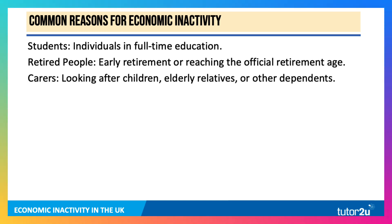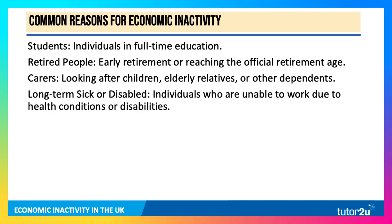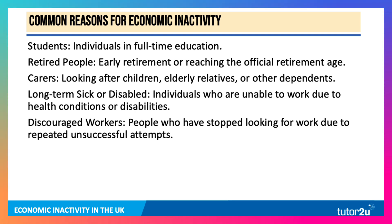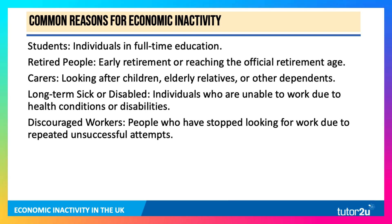People might be carers, looking after children and also elderly relatives or other dependents — the so-called sandwich generation, people who are still looking after their children but also having to look after elderly relatives. There is also an issue with long-term sickness and disabilities, where people are unable to work due to chronic health conditions. And there are discouraged workers — people who have been unemployed for a long time, tried to find new work, but have stopped looking due to repeated unsuccessful attempts, having lost the motivation to continue with active job search.